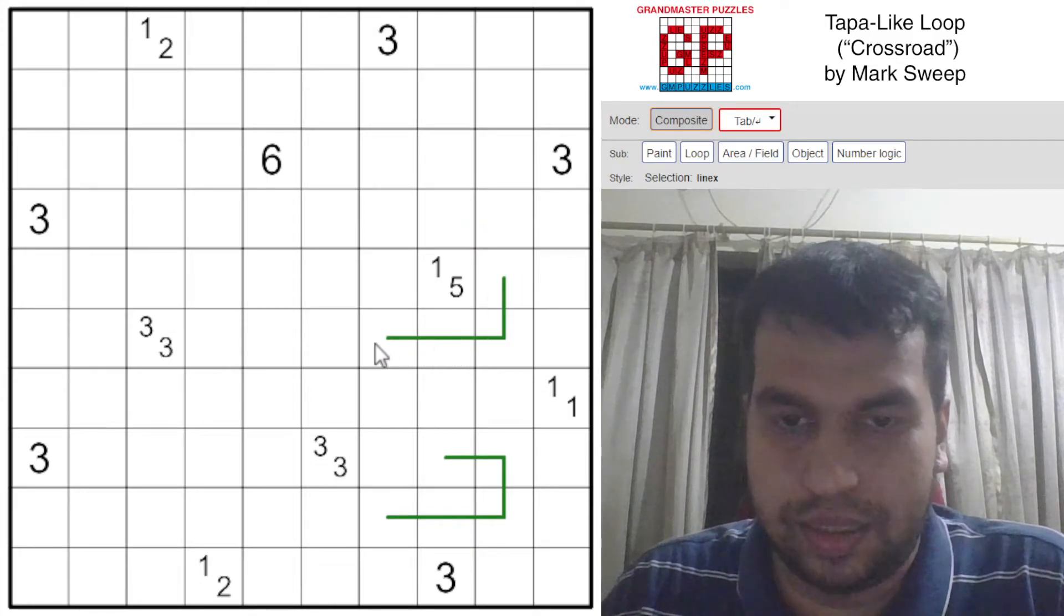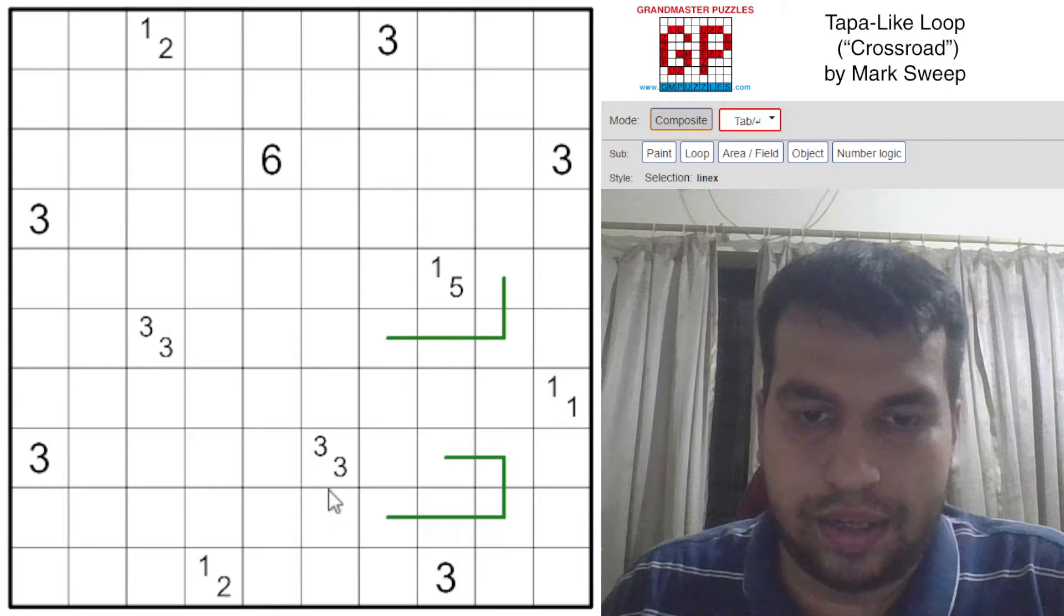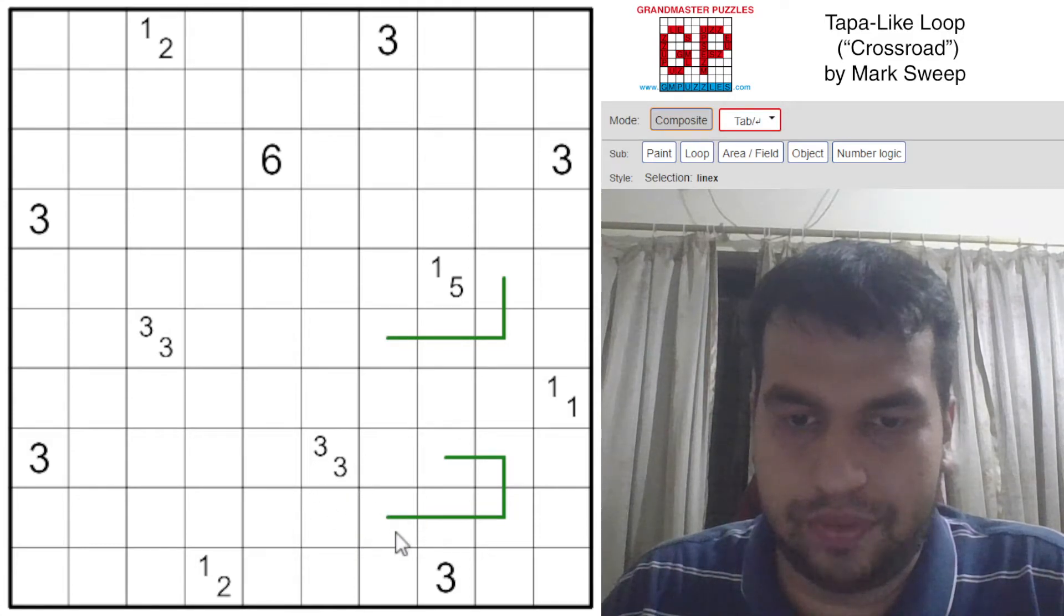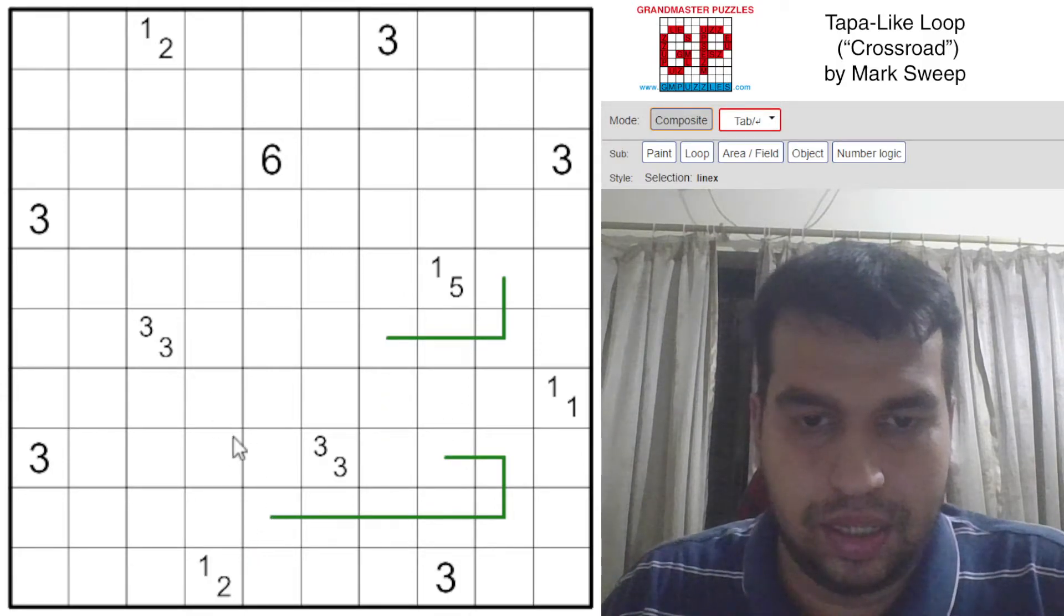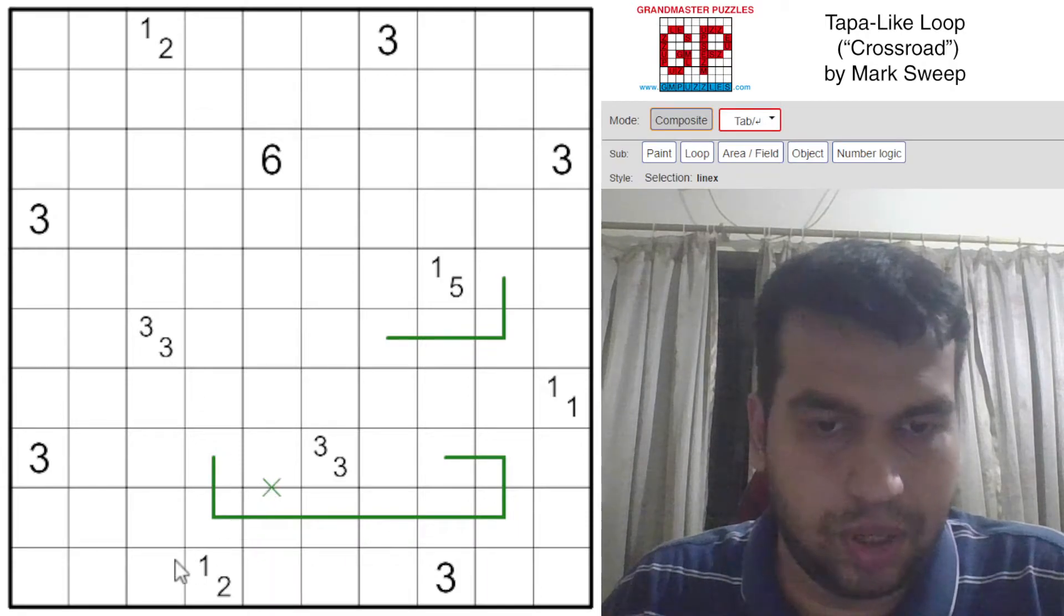So that means it continues at least one cell here. That tells me that if this 3-3, if I take this up, this will form a loop by itself, it'll enclose. So this goes this way, and it will continue on this way because it can't go up here.